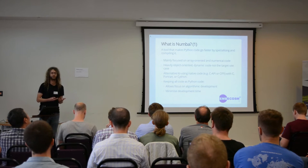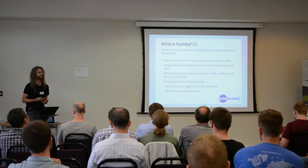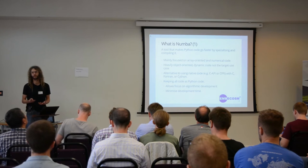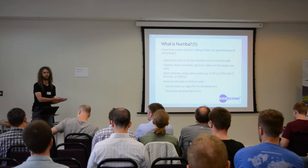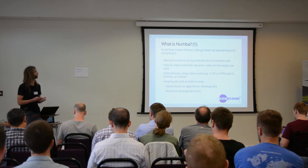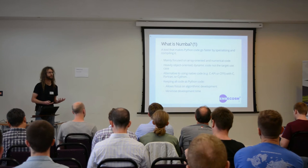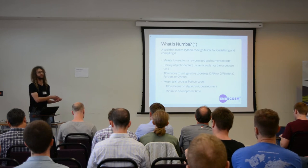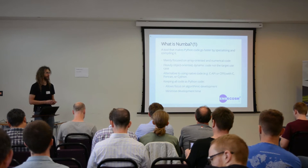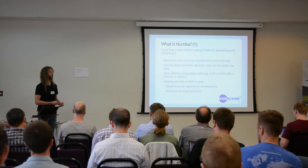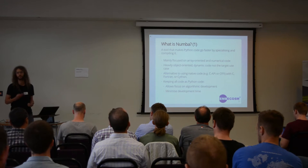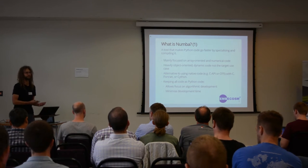So what is Numba? It's a tool that you can use to make your Python code go faster by specializing and compiling it. Most of the development effort on Numba has been focused around making it work well for numerical code — code that uses lots of arrays. If you have code that uses a lot of object-oriented design and lots of dynamic features of Python, that will be more challenging to get to work well with Numba because that's not really its focus. It is an alternative to using native code, perhaps by writing some code in C or Fortran and interfacing it with Python's C API or the C foreign function interface. The advantage of using Numba instead of those methods is that you keep all your source code as Python, which makes it easier to develop and maintain, especially if your developers are more familiar with Python than native languages.